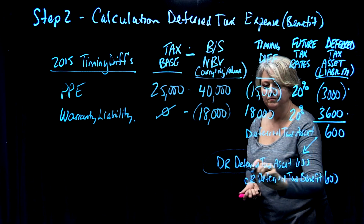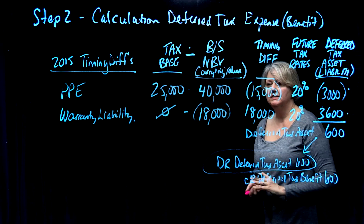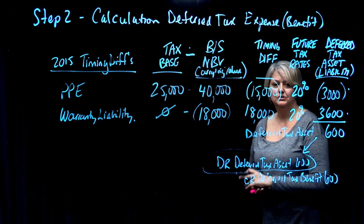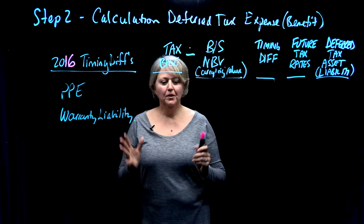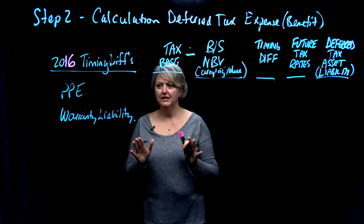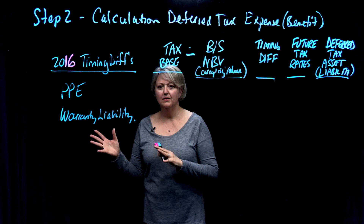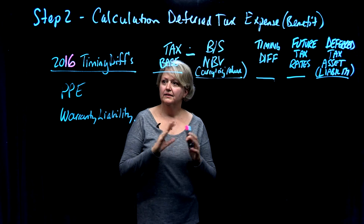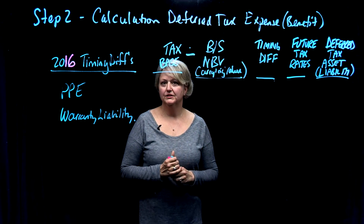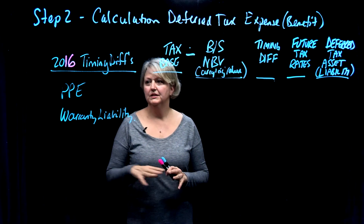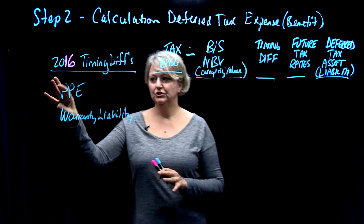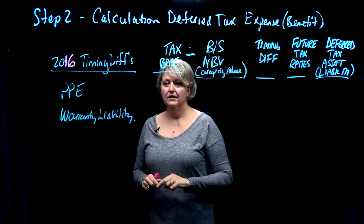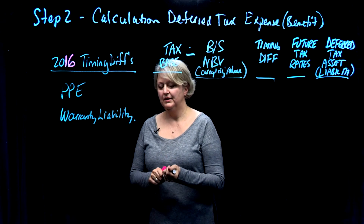The $600 deferred tax asset would be sitting on the balance sheet at the beginning of fiscal year 2016, so we need to know that as our starting point for the Step 2 deferred tax calculation. We can now start this year's calculation. The two timing differences carried over from last year are property, plant, and equipment, and the warranty liability — plus a couple of new ones we created this year during Step 1.